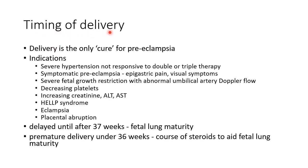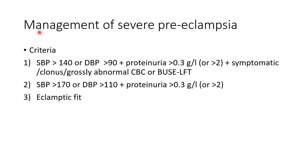Delivery is the only cure for preeclampsia. Indications for immediate delivery include severe hypertension not responsive to double or triple therapy, symptomatic preeclampsia with epigastric pain and visual symptoms, severe fetal growth restriction with abnormal umbilical artery Doppler flow, decreasing platelets, increasing creatinine, ALT and AST, HELLP syndrome, eclampsia, and placental abruption. Ideally delivery should be delayed until after 37 weeks, but if premature delivery under 36 weeks is required, steroids should be given to promote fetal lung maturity.